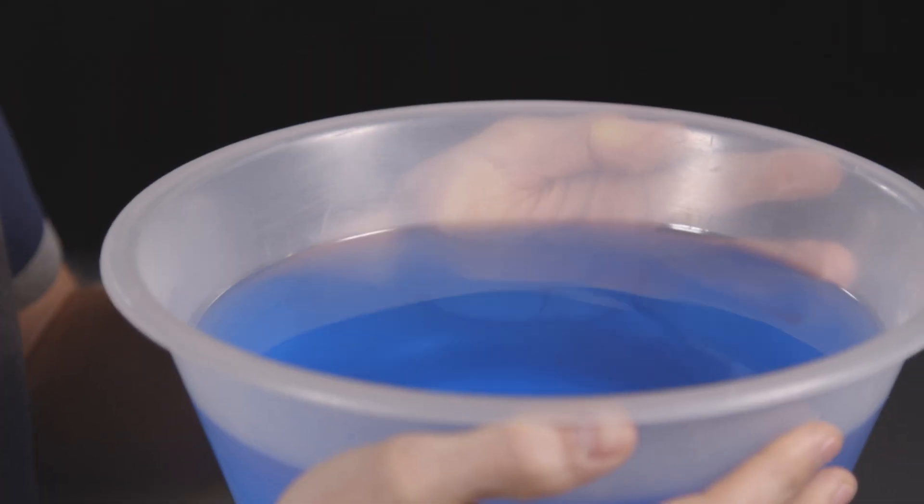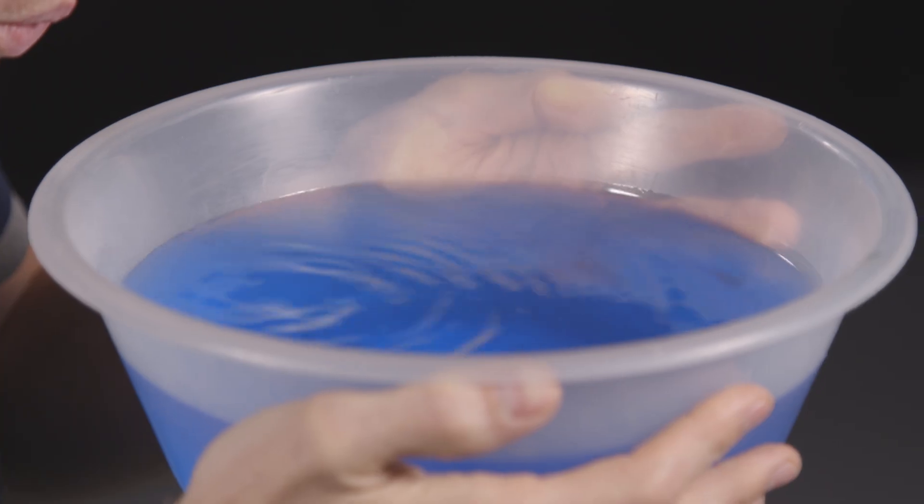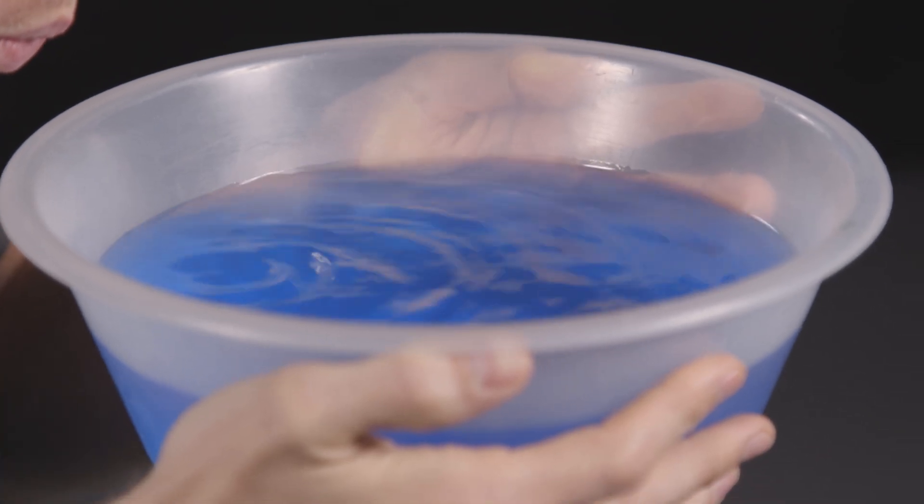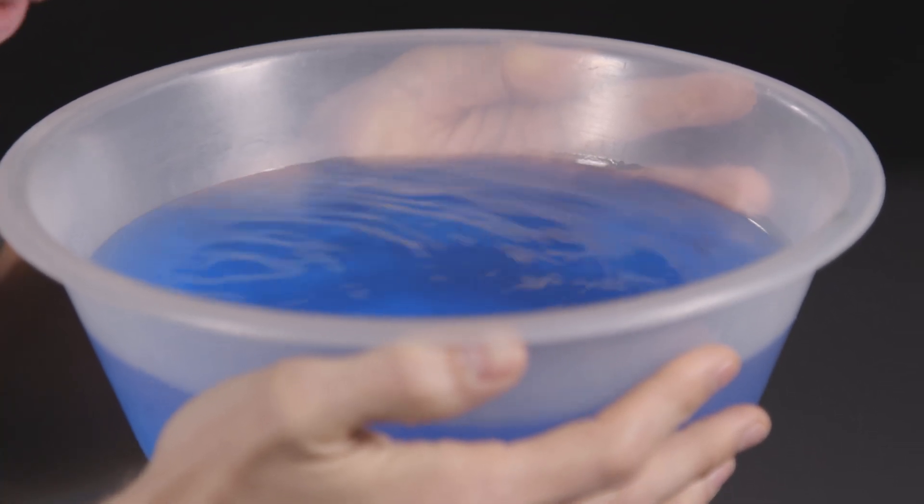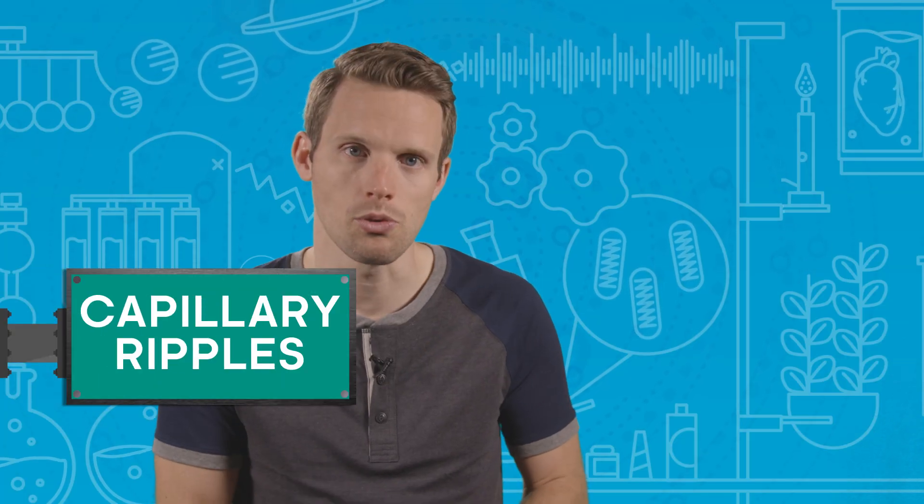It all starts with still water, like this. Wind blowing across the surface drags some of the water along with it, creating a regular series of lumps that are known as capillary ripples. These are only small, and the surface tension of the water itself is enough to flatten them back out again.